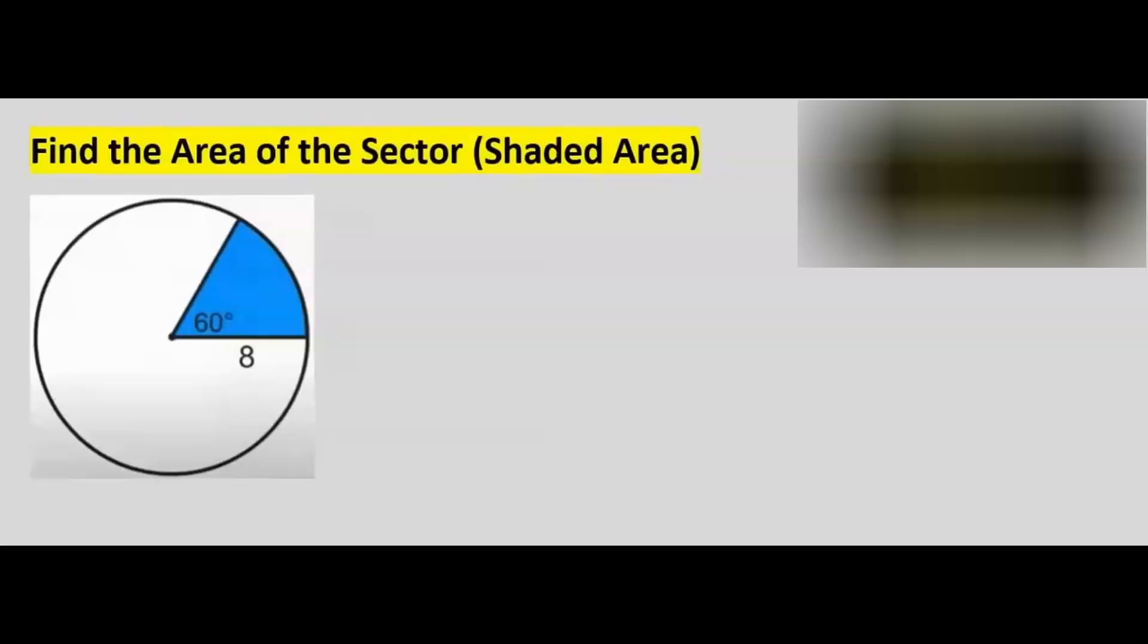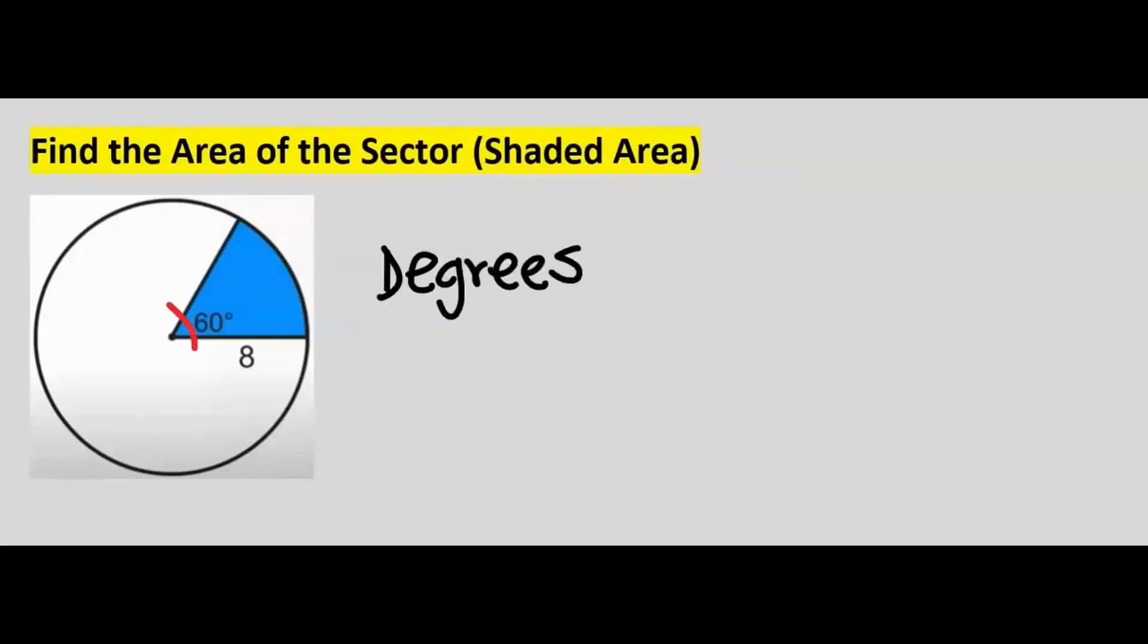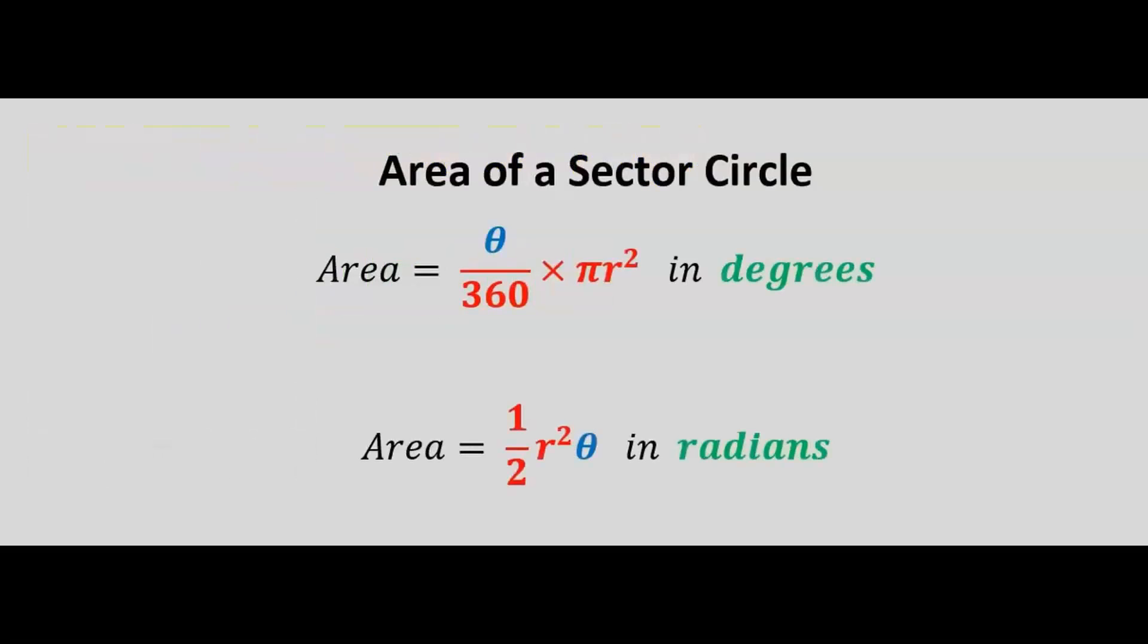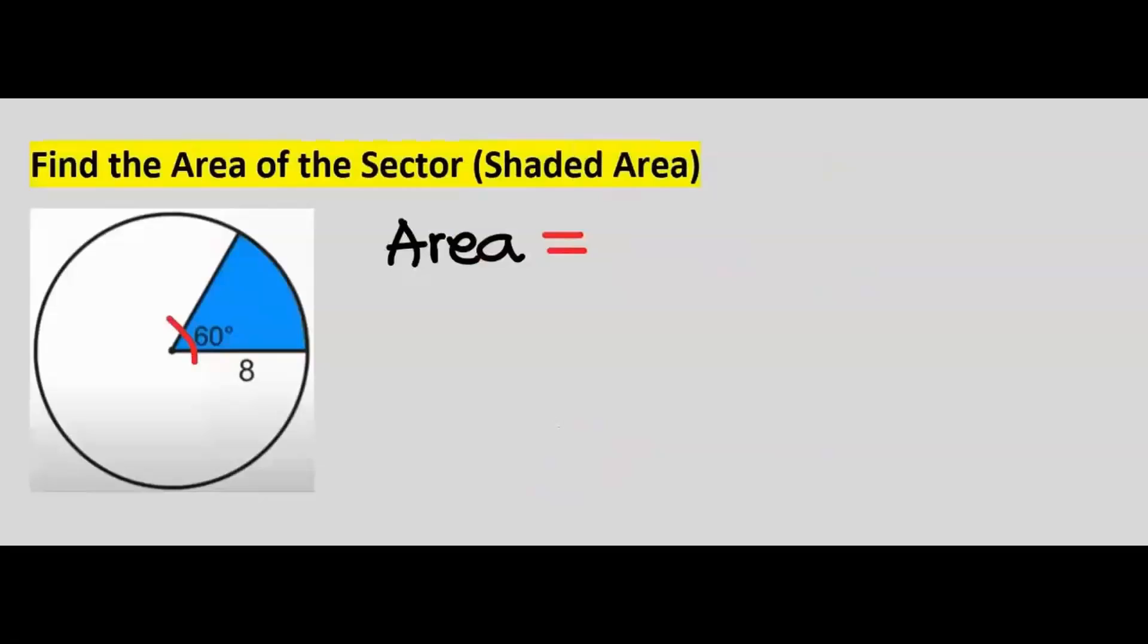Step number one: consider the angle at the center. The given angle is in degrees. Step number two: choose the right formula for degrees, which is this. Step number three: the area of a sector is the area of a circle multiplied by the given angle divided by 360.